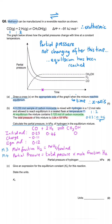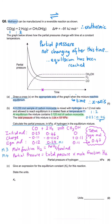For hydrogen, we started with 0.46 moles. The change is 0.11 × 2 = 0.22, because of the 1:2 ratio between carbon monoxide and hydrogen, giving 0.24 moles of hydrogen at equilibrium. For methanol, the change is 0.11 moles — because the ratio of methanol to carbon monoxide is 1:1 — so methanol goes up by 0.11 moles, giving 0.11 moles at equilibrium. The total moles at equilibrium is 0.12 + 0.24 + 0.11 = 0.47.